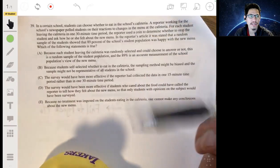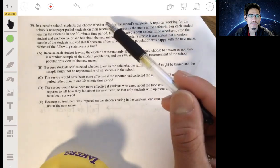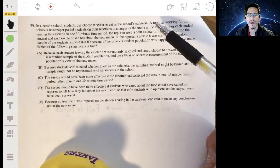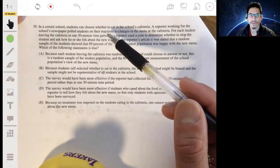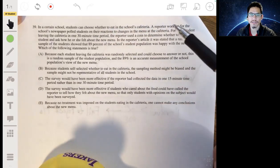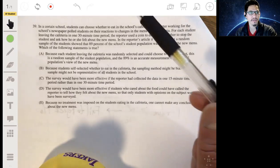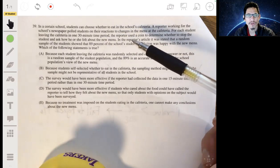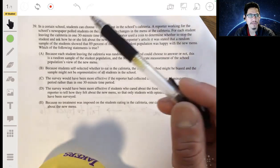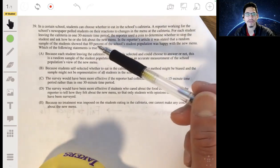Alright, problem 39. We have that at a certain school, students can choose whether to eat in the school's cafeteria, and a reporter working for the school's newspaper polled students on their reactions to changes in the menu at the cafeteria. For each student leaving the cafeteria in one 30-minute time period, the reporter used a coin to determine whether to stop the student and ask how he or she felt about the new menu.